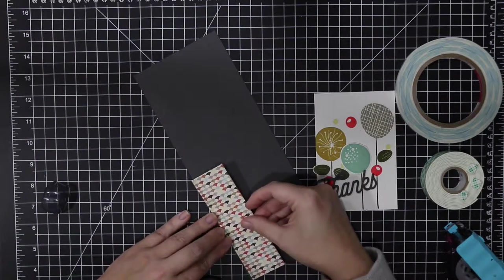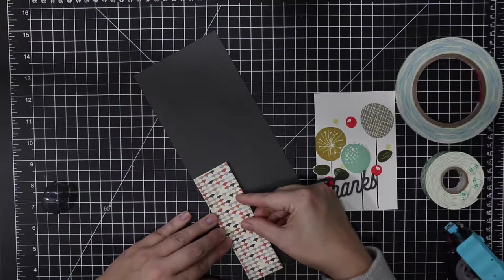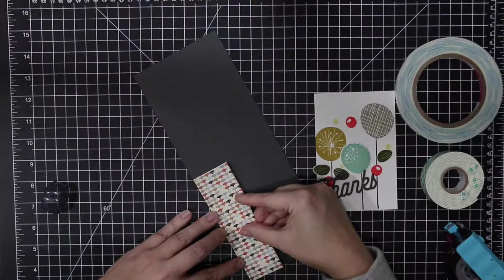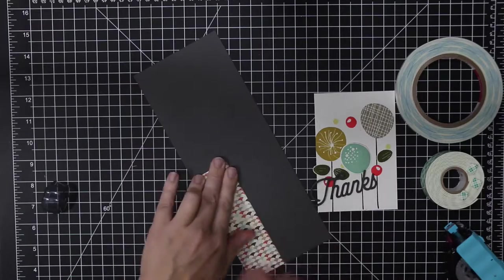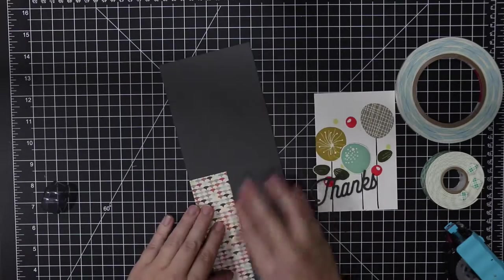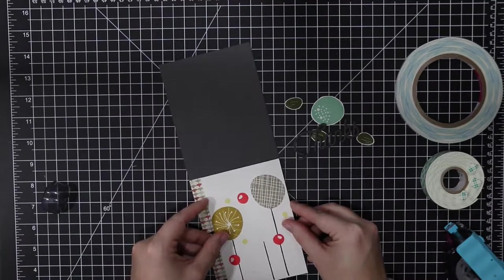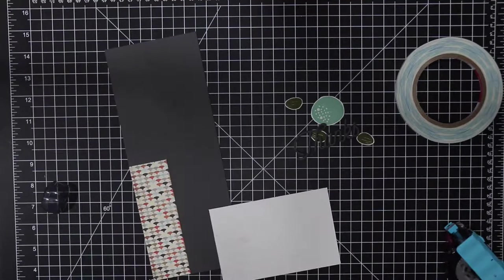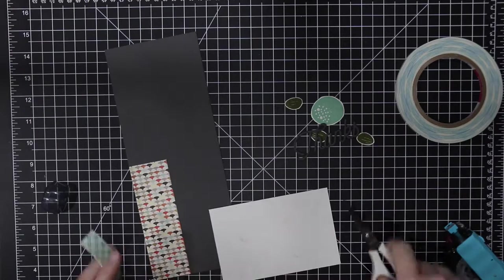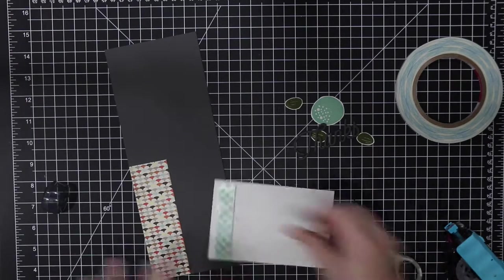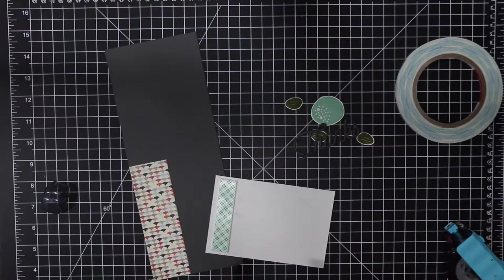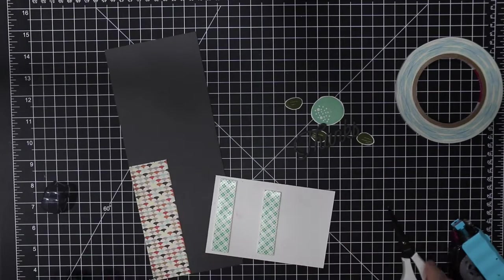I'm using this pattern paper to go on the side to accent these beautiful colors. And I'm gonna pop up this background or front panel with some foam tape. It's a standard A2 top folding card.